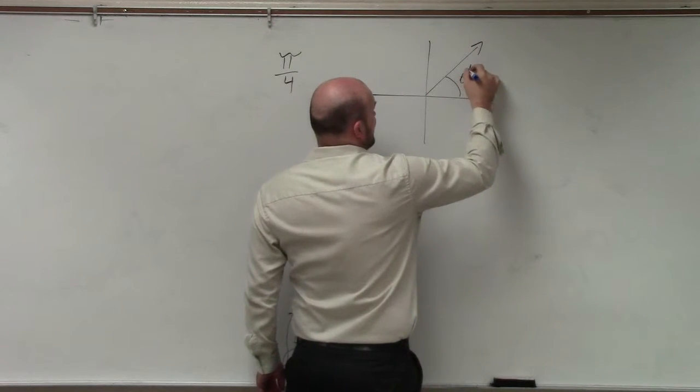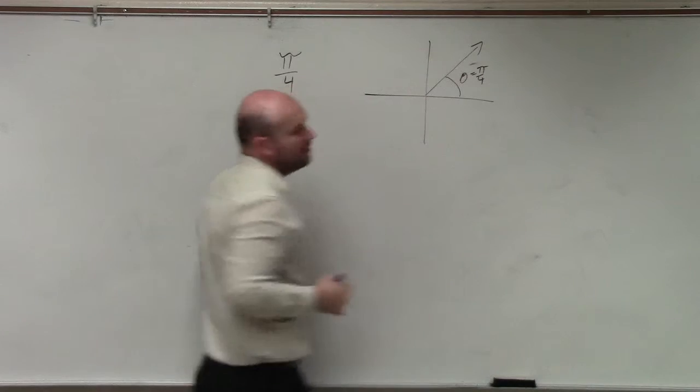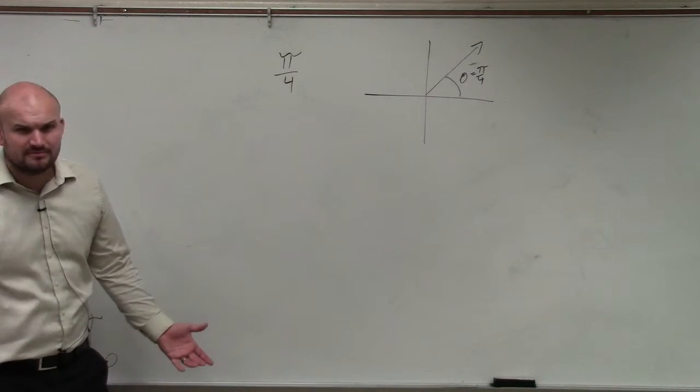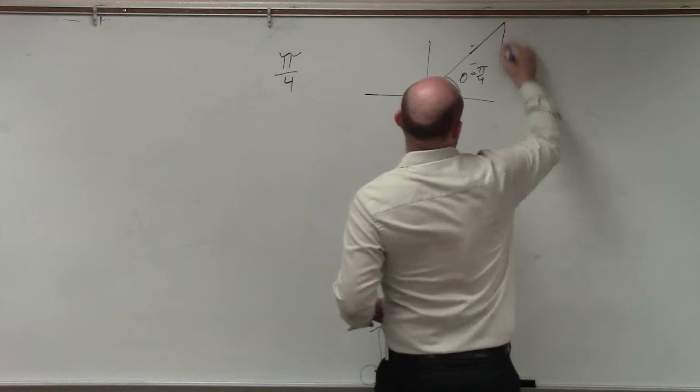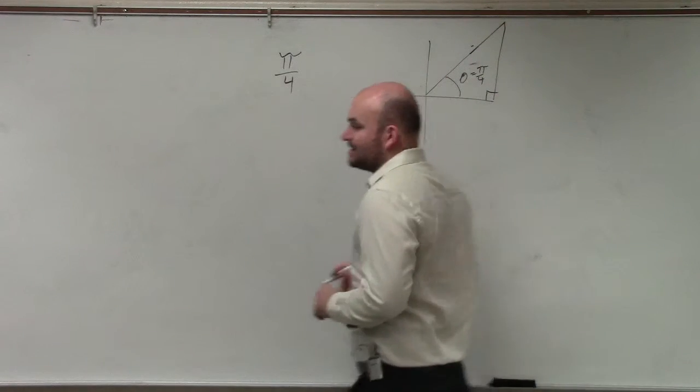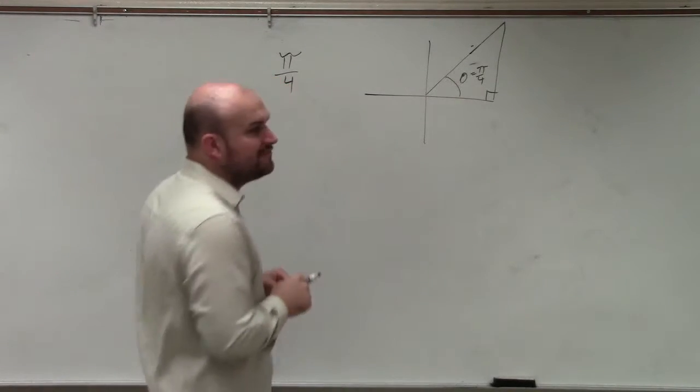And we already identified theta equals π/4. We identified that's in the first quadrant. I don't need to break it up into fours, you guys are pretty good with that. We also talked about that π/4 is the same thing as 45 degrees, but it creates a 45-45-90 triangle.